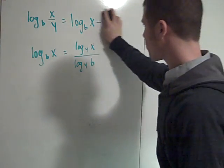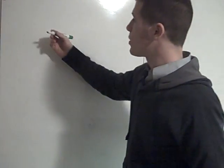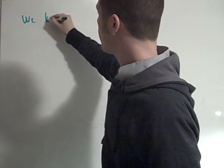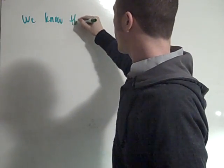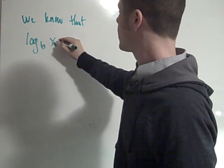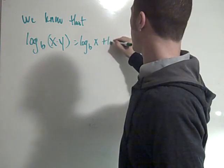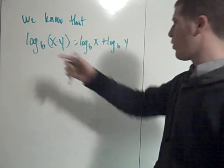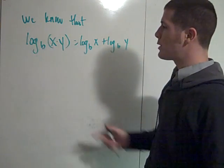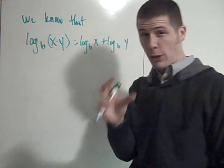So let's prove the quotient property. The quotient property really relies on the product property. We know that the log base b of x times y is equal to the log base b of x plus the log base b of y. All we're going to do is change this product to be a quotient, which are super closely related.